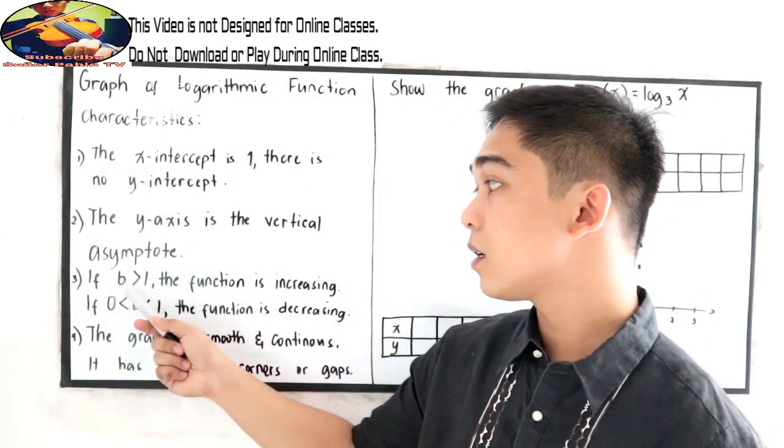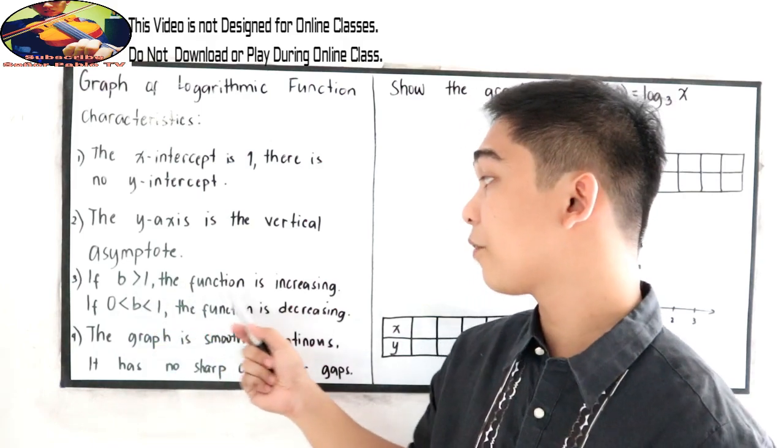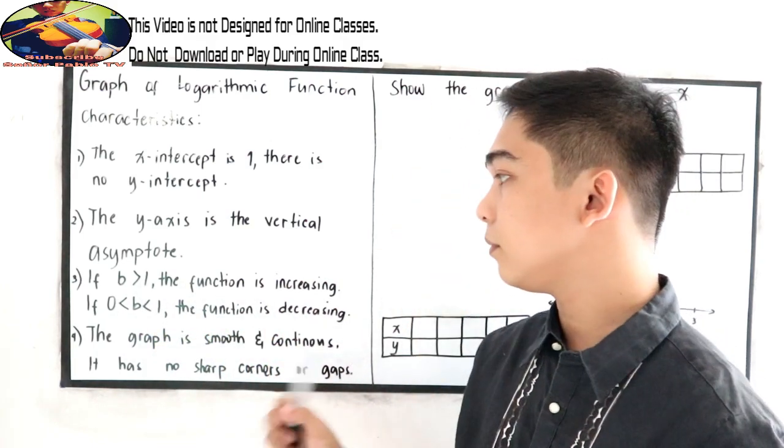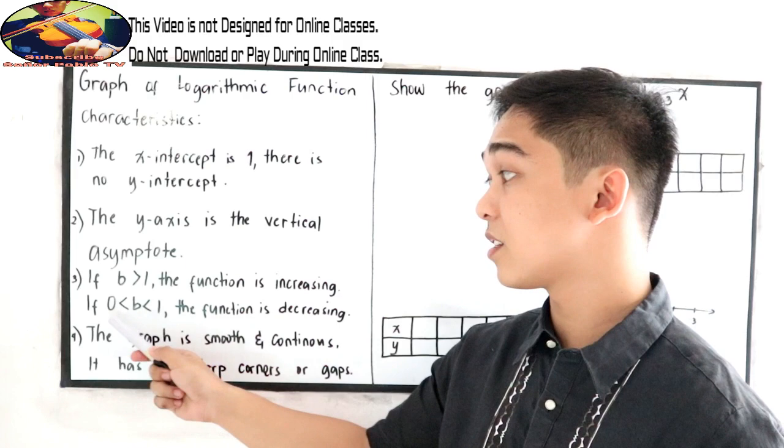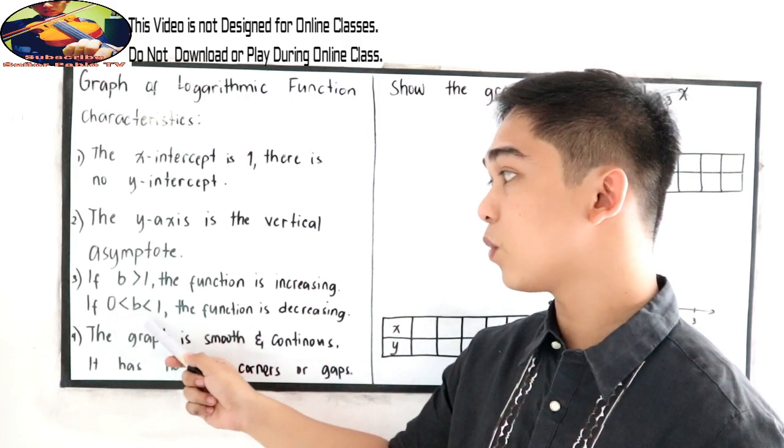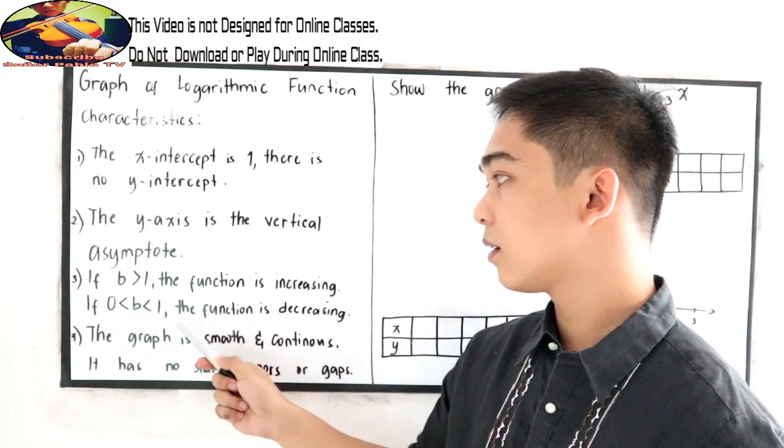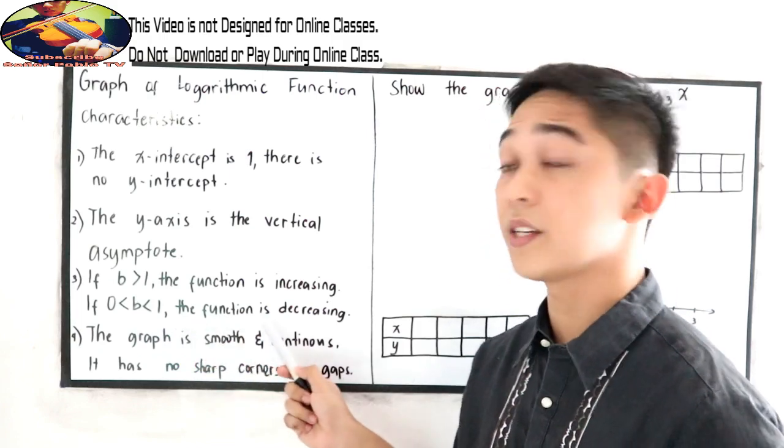If b is greater than 1, the function is increasing. And if b is less than 0 but greater than 1 but less than 1, the function is decreasing.